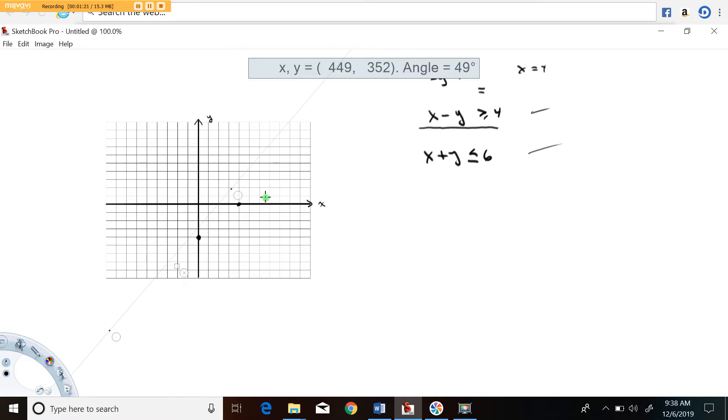Now here's where you start paying attention to the inequality stuff. Because the actual one here does actually have equality, you connect these with a solid line as opposed to a dashed line.